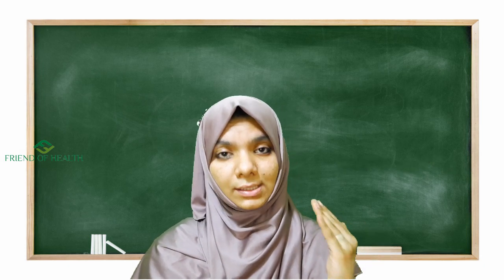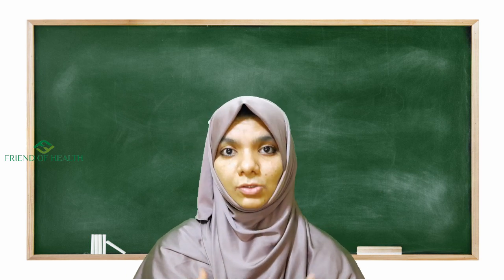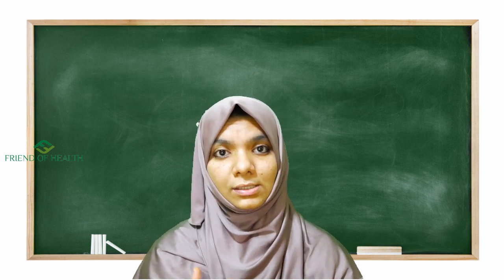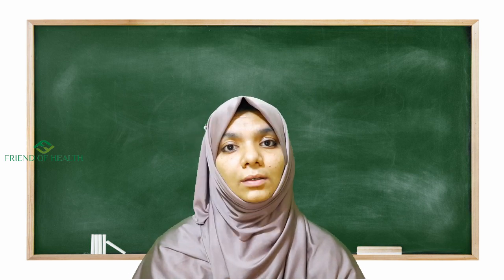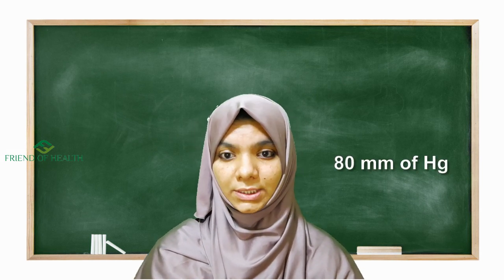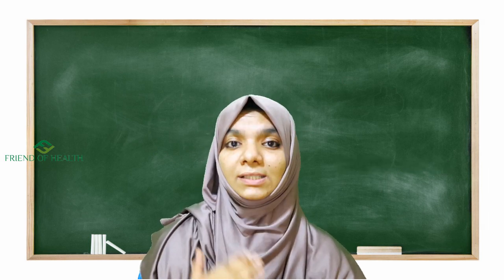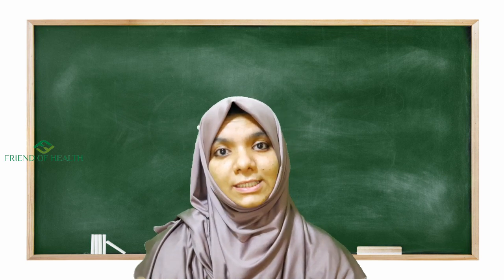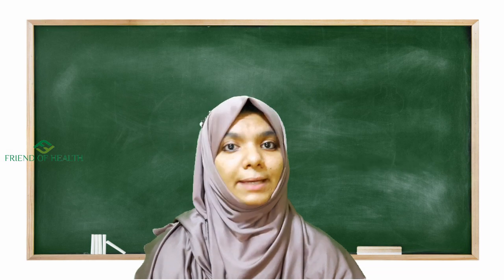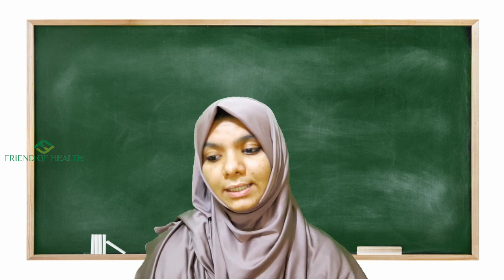Diastolic pressure is the minimum pressure exerted in the arteries during the diastolic phase, that is, the relaxation phase. Normal diastolic pressure is 80 mmHg. Pulse pressure is the difference between systolic and diastolic pressure. Normal pulse pressure is 40 mmHg, that is 120 minus 80 mmHg.